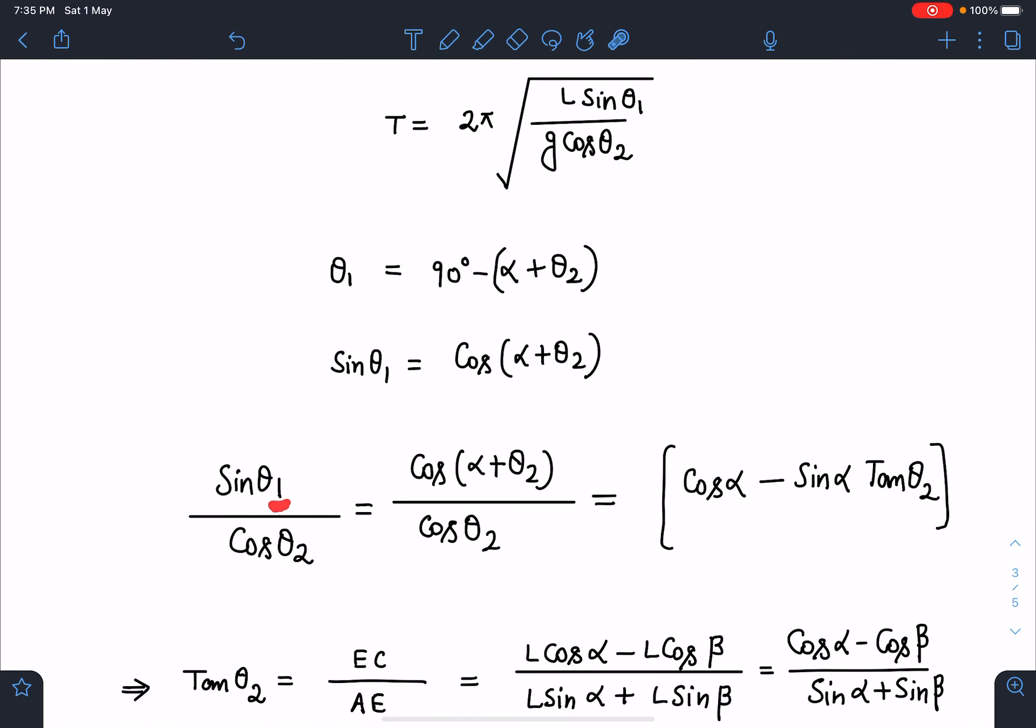So sin theta1, theta1 I can write as cos of alpha plus theta2 divided by cos of theta2. Now here I can open this cos of a plus b formula. So cos a cos b minus sin a sin b it will give. So when I simplify this, I am going to get cos alpha minus sin alpha tan theta2. So somehow if I can calculate this tan theta2 value in terms of known quantities, I will get the answer in that case.